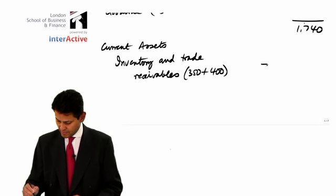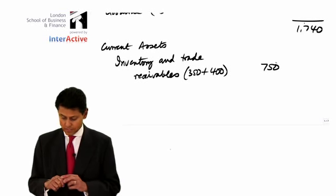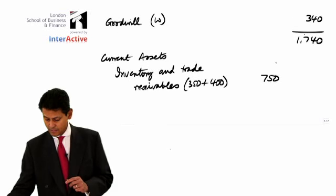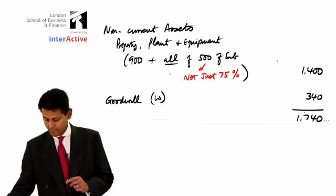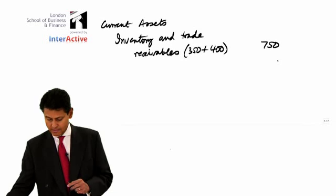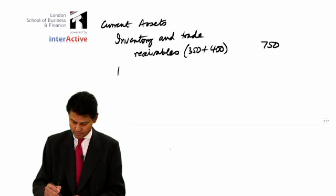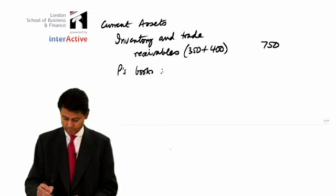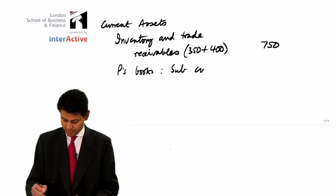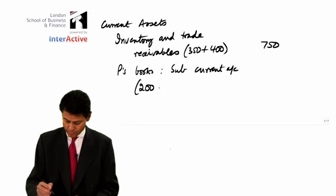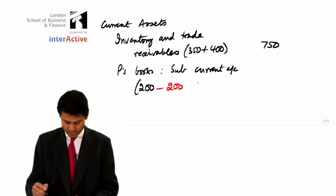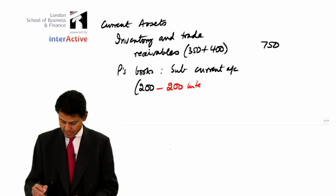So, a bit to the right, I'm going to say 750. I think we have a dollar sign higher up the page. Let's have a look. Yep, there it is. 750. And then you've got P's books. Whose books are they in? The subsidiary current account stands at 200. But, of course, we're removing 200 because it's intercompany.